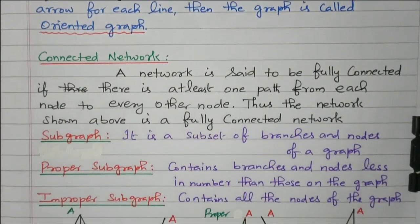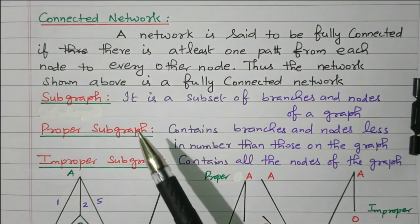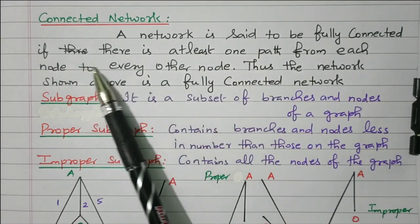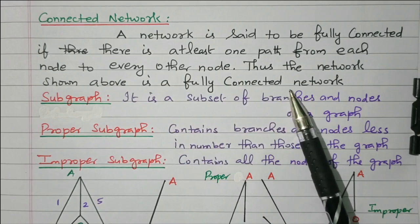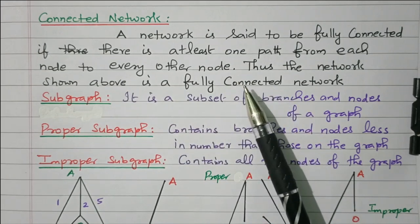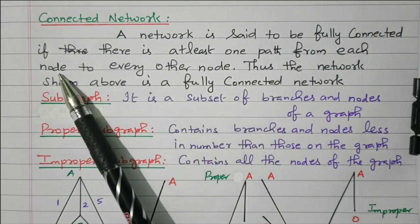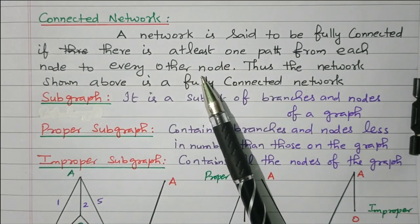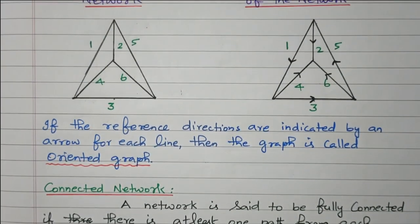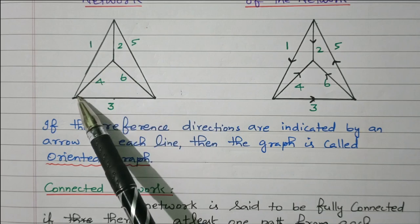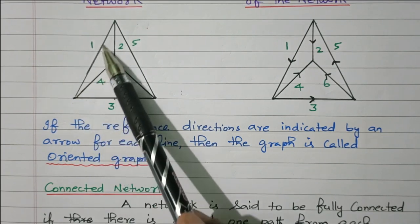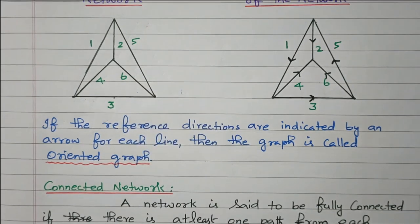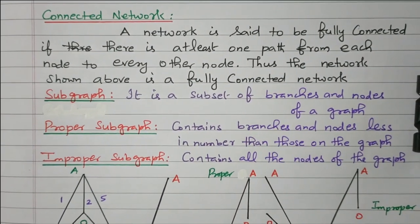Now we will see the connected network. A network is said to be fully connected if there is at least one path from each node to every other node. In our network, node B is connected to O, A, and C — so that is a connected network. What we have discussed so far is a connected network, where one node should be connected to all other nodes.